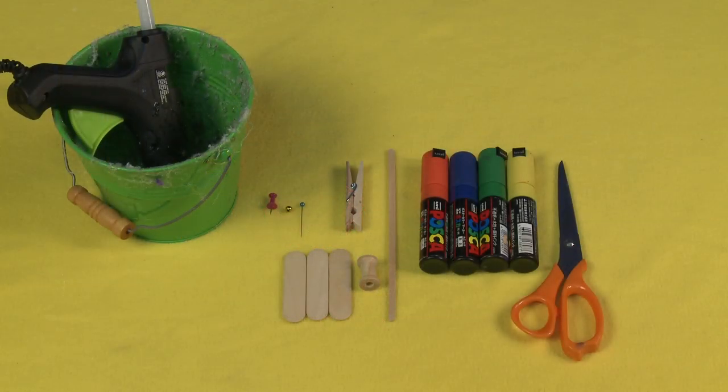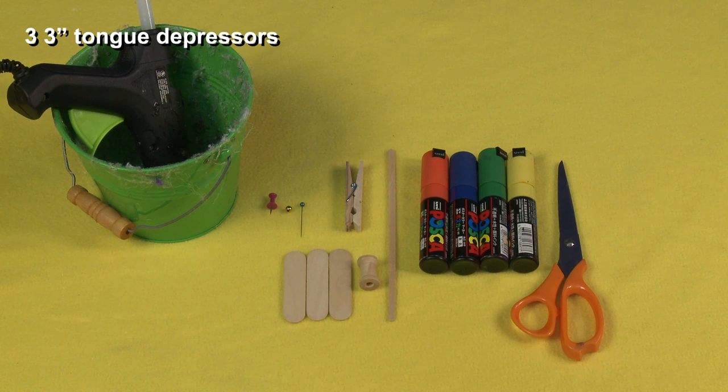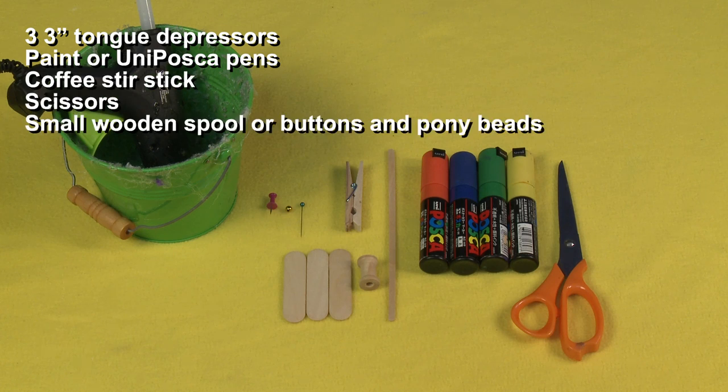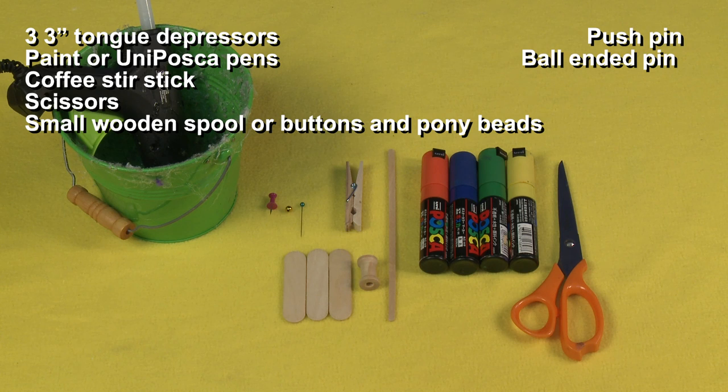For this project you will need three 3-inch tongue depressors, paint or UniPosca pens, a coffee stir stick, scissors, small wooden spool or buttons and pony beads, push pin, a ball ended pin, small bead, and a glue gun.